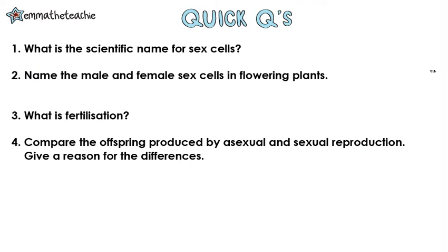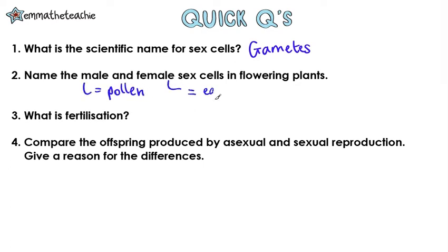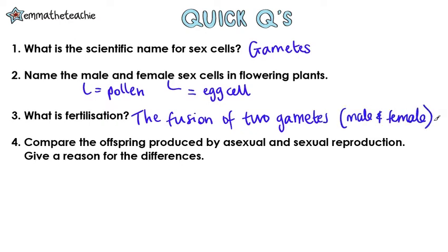Pause and try these questions, then press play when you're ready to go through them. Number one: What is the scientific name for sex cells? These are gametes. Two: Name the male and female sex cells in flowering plants. The male sex cell is pollen, and the female sex cell is an egg cell. Three: What is fertilization? This is the fusion of two gametes, the male and female.